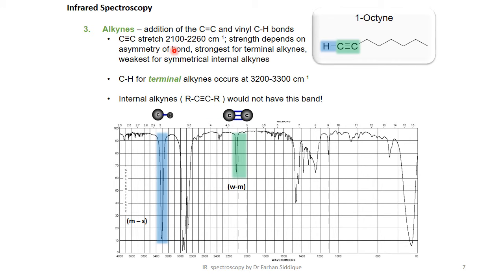In alkynes we have an example of 1-octyne. Alkynes show addition of the C≡C and vinyl C-H bonds. C≡C stretch from 2100 to 2260 cm⁻¹, strength depends on asymmetry of bonds, strongest for terminal alkynes, weakest for symmetrical internal alkynes. C-H for terminal alkynes occurs at 3200 to 3300 cm⁻¹. Internal alkynes R-C≡C-R would have this band as shown in the figure.